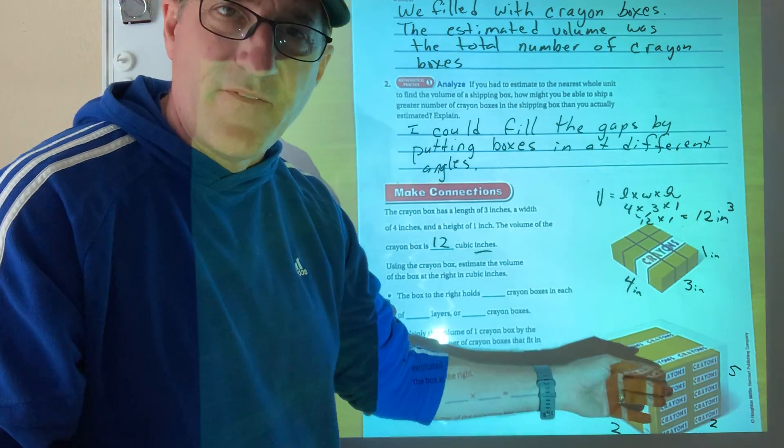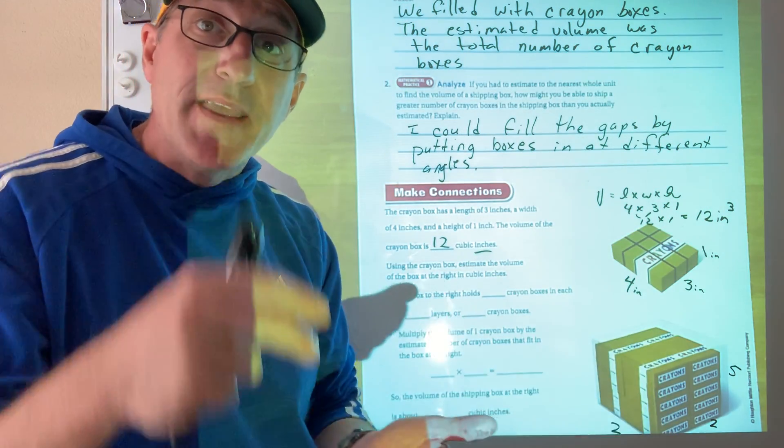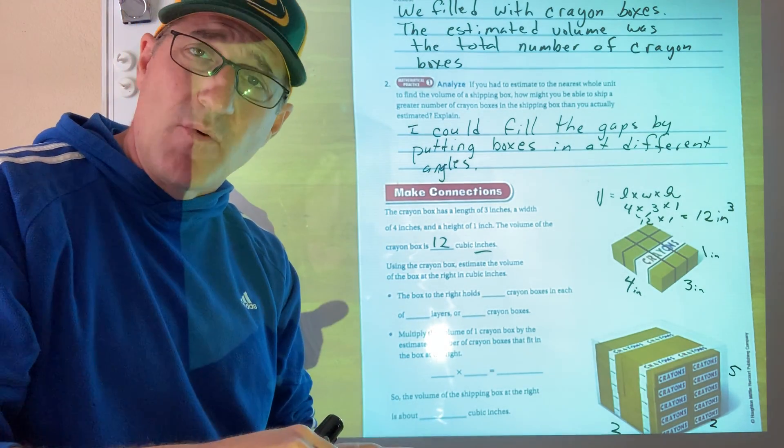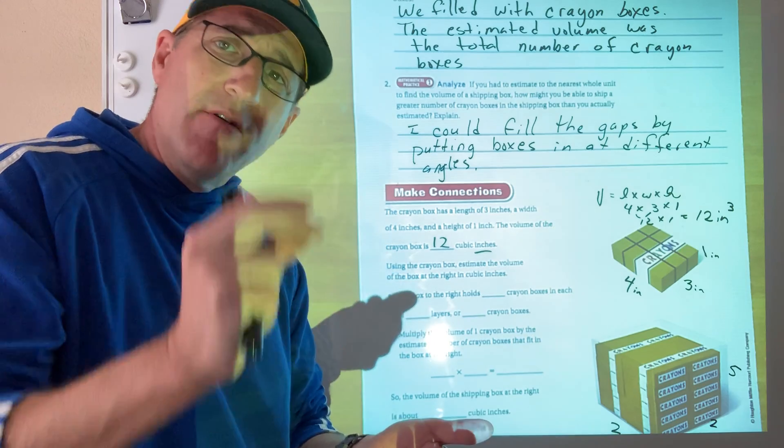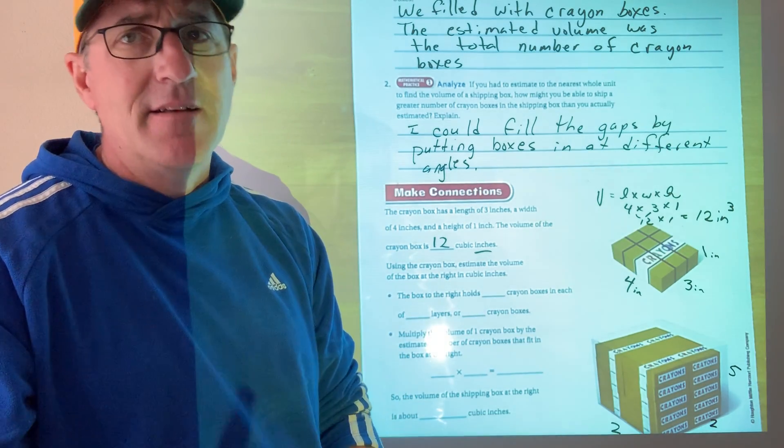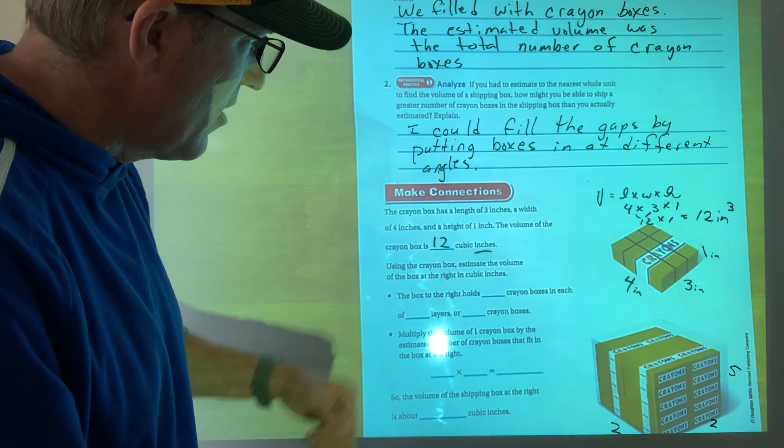I go, well, if this is 12 and I can fit five of these in here, then it's about 60 because I fit five of them in there. I'm repeatedly adding a volume of 12. Every cram box is a volume of 12. I repeatedly add the same number. What operation is that? Of course, it's multiplication.